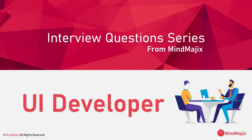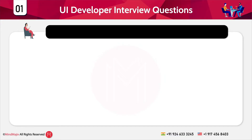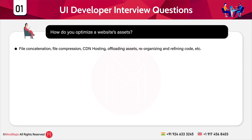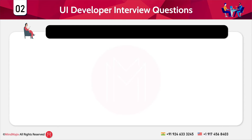Without any further delay, let's get started. The first category of questions is for UI developers. The first question is: how do you optimize a website's assets? There are a few ways to optimize a website's assets, such as file concatenation, file compression, CDN hosting, offloading assets, and reorganizing and refining code.